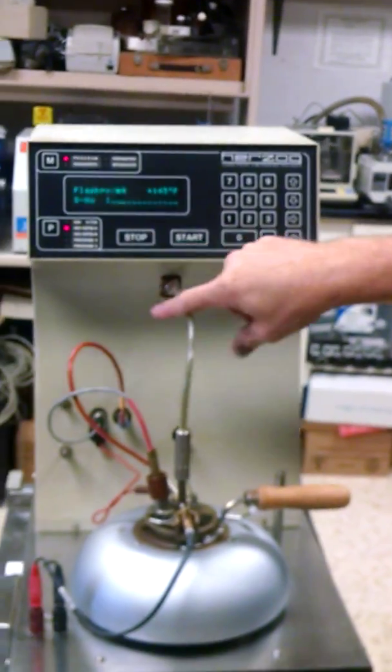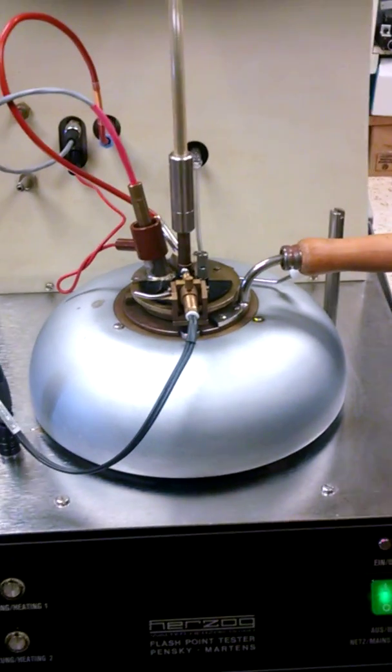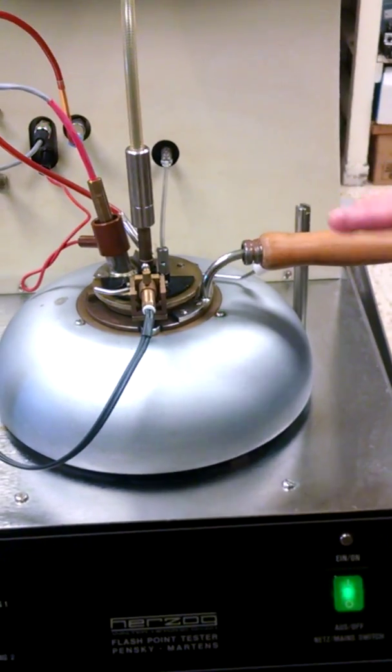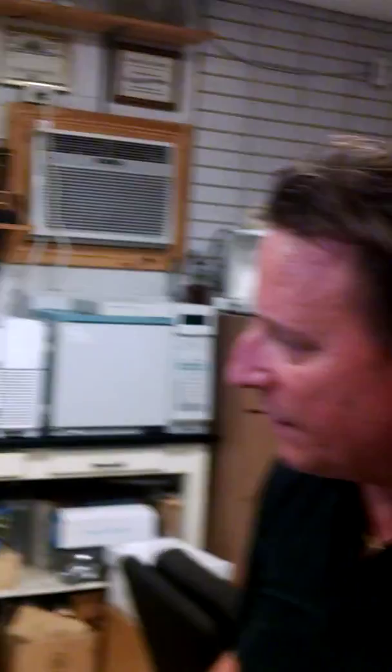Anyway, now you can hear the fan starts to kick on to cool it down. So what happens now, it'll cool down. You just remove your sample and put a new sample in. And run another flash. Anyway, thank you. This is Bill Kettenbrink with Bamco Surplus Process Equipment. Thank you for watching. Give us a call and we'll sell you some equipment. Thank you.